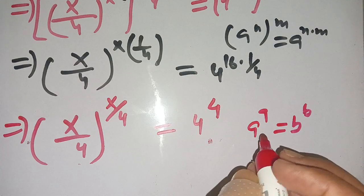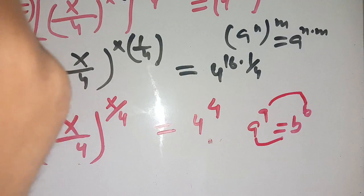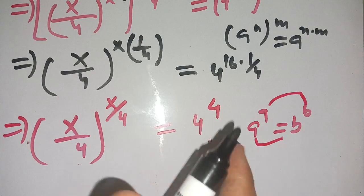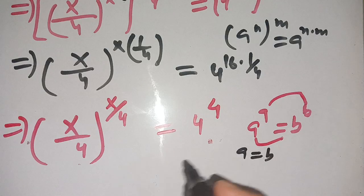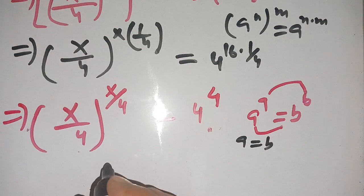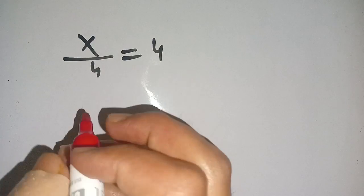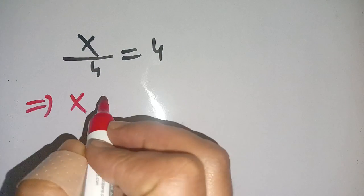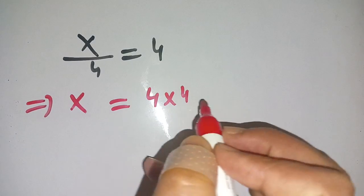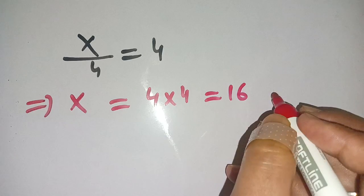Now this is in the form a^a = b^b. Comparing base to base or power to power, we get a = b, meaning x/4 = 4. On multiplying both sides by 4 we get x = 4 times 4 = 16.